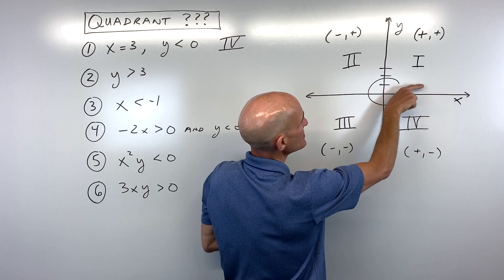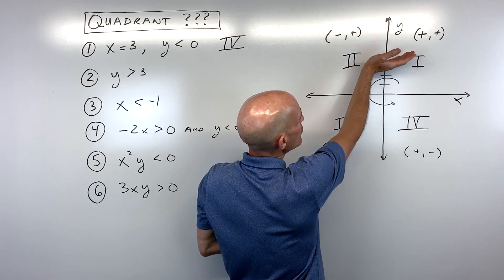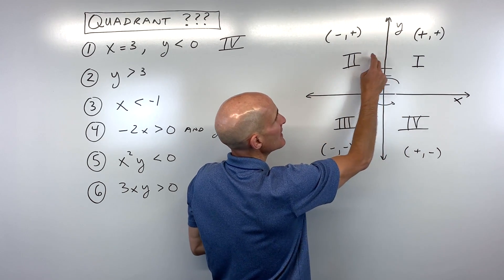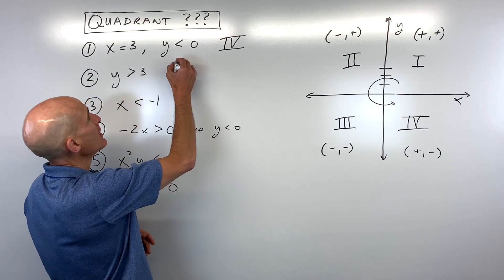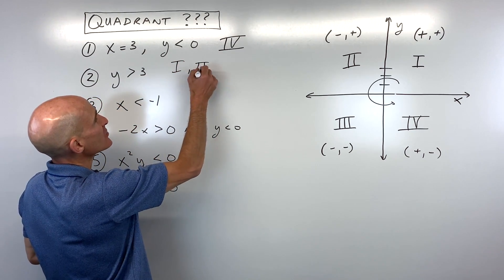But it doesn't tell us what the x value could be. It could be negative, meaning we're going to the left. x could be positive, meaning we're going to the right. All we know is that we're above three. So that means we could be in either quadrant one or two. So we've actually got the two quadrants as our answer there.